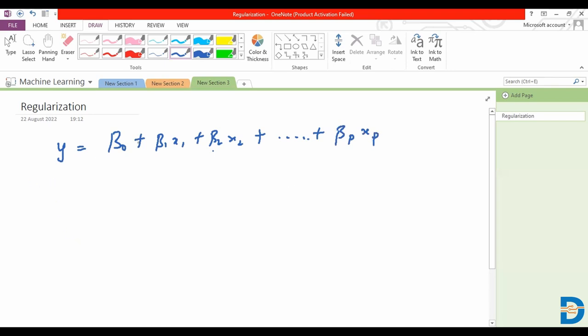Effectively, these coefficients are designed such that we are able to minimize our difference between the, or the residual, which would be the error between the predicted value and the actual value. So to speak, if this is our predicted value, we can say y hat.